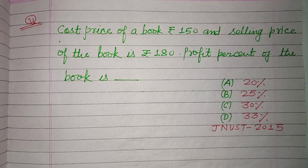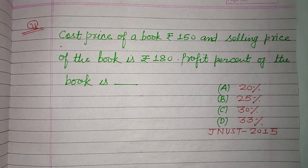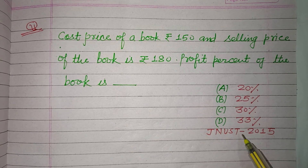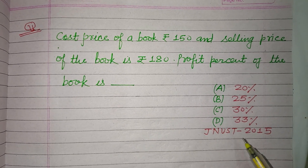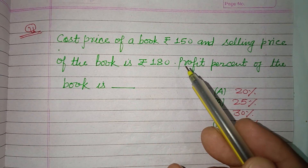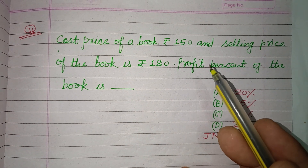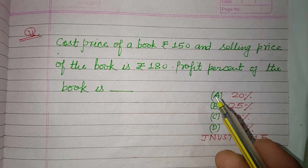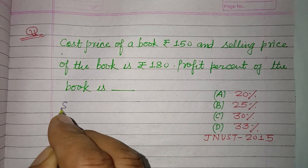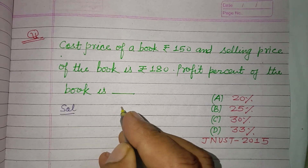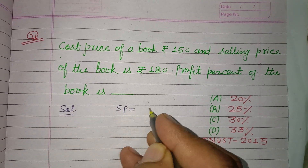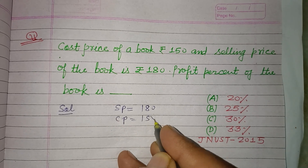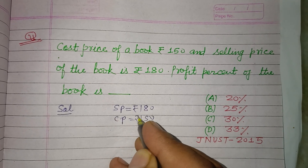Hello viewers, warm welcome to this YouTube channel. This is a question from Javala Buddhya School Test 2015. The cost price of a book is rupees 150 and the selling price of this book is 180. The profit percent of this book is to be found. Here, selling price is given as 180 and cost price is given as 150 rupees.